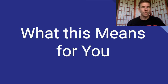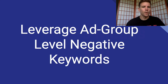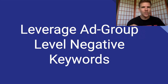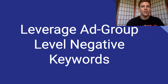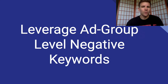Now, what does this mean for you? It depends on whether you're a small business or a marketing agency. Either way, the first thing you're going to want to do is leverage ad group level negative keywords. On each ad group — using the lawn mowing service example — if you want to negate 'cutting' and 'grass,' you've got to put those as negative keywords on that specific ad group to prevent those terms from showing. That's the only way we can control that at this point in time.